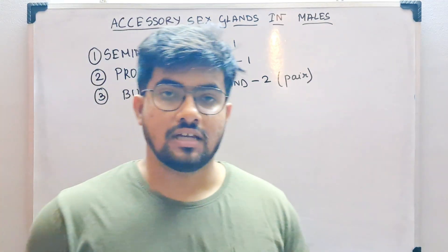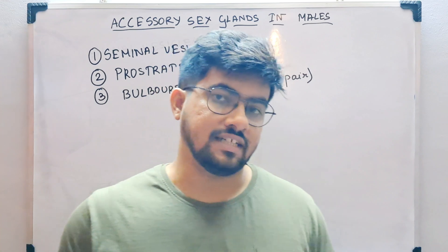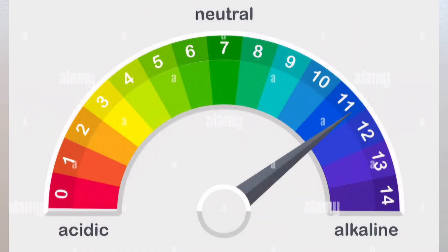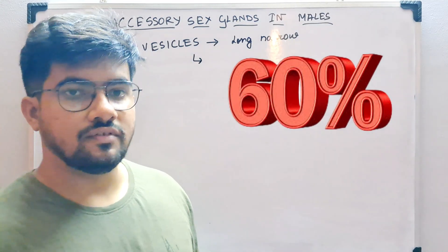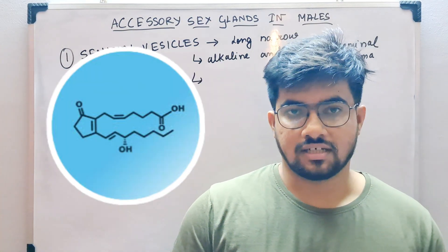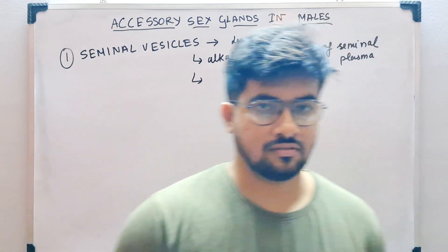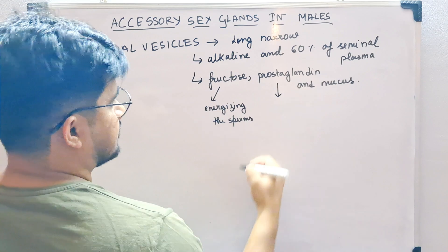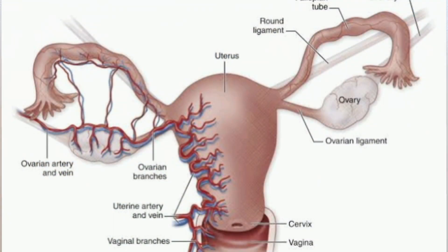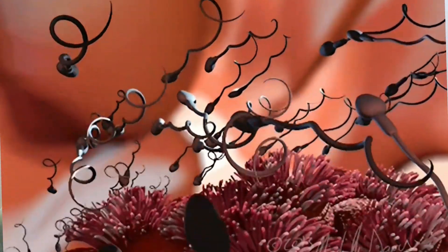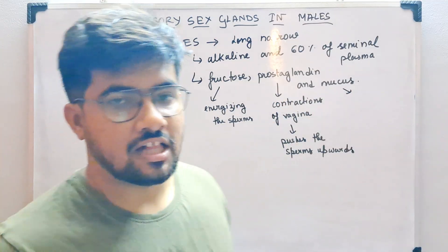The seminal vesicles secrete an alkaline fluid and make up about sixty percent of the seminal plasma. Their secretions mainly contain fructose, prostaglandins, and mucus. The fructose helps in energizing the sperms, prostaglandins help in the contraction of the female uterine tract and vaginal tract — this contraction helps to move the sperm upward when it is deposited — and mucus helps in lubrication.